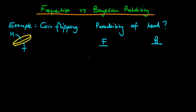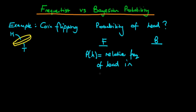Starting with the frequentist view, we can think about the probability of a head as representing the relative frequency of getting a head if we were to flip the coin a long number of times — a long series of what we're going to call identical flips. We can imagine flipping the coin a large number of times, perhaps an infinite number of times, counting the number of heads and dividing that by the total number of throws.